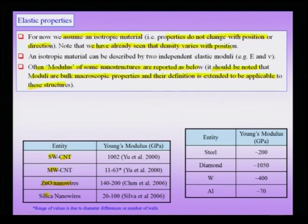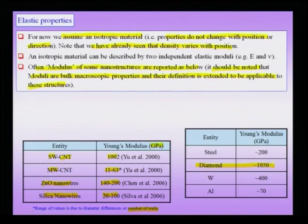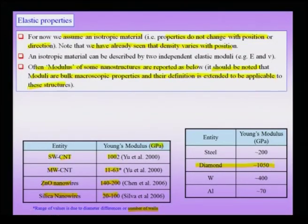Some values reported in literature: silica nano wires have modulus variation in the order of 20 to 100 GPa, zinc oxide nano wires from 140 to 200 GPa, multi-wall carbon nanotubes in the range of 11 to 63 GPa depending on the number of walls. Single-wall nanotubes have very high modulus which approaches that of diamond. Even though single-wall carbon nanotubes can be thought of as folded graphene sheets, their modulus when pulled along the length can be very high and can challenge that of diamond. People have even envisaged making ropes out of single-wall nanotubes with very high modulus, and they can be used as reinforcement in composites — which we call nano composites.